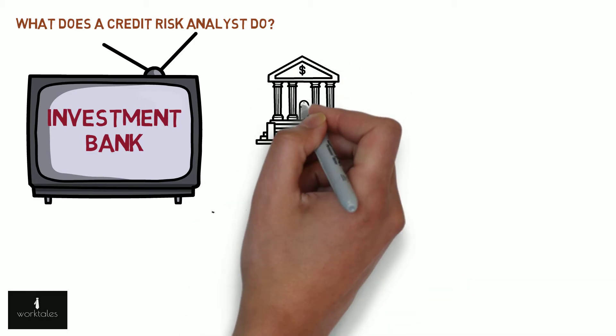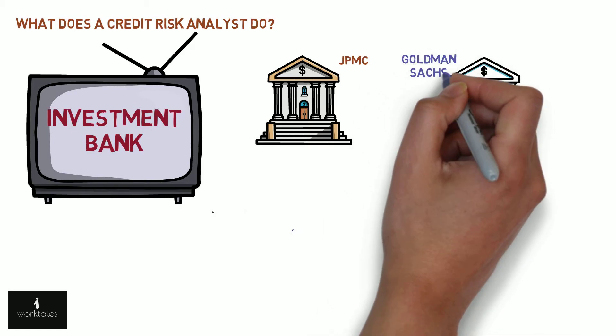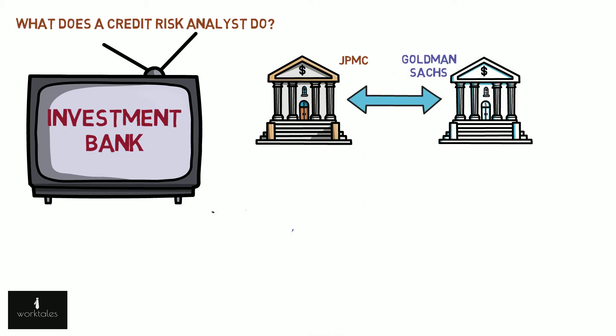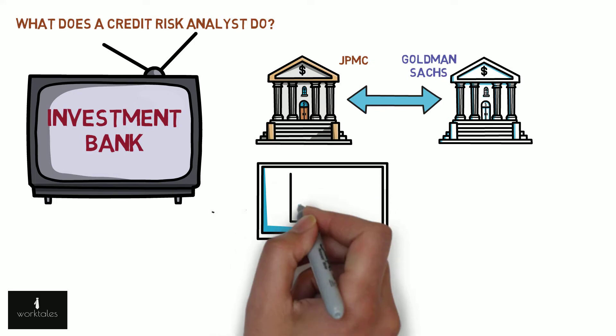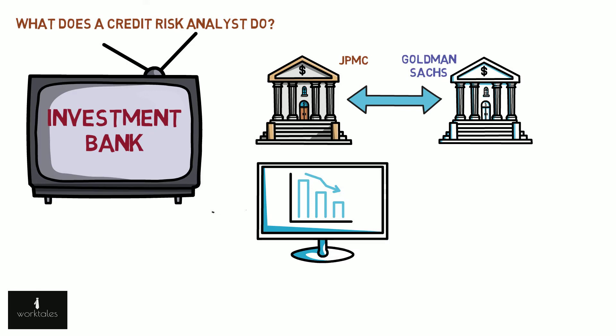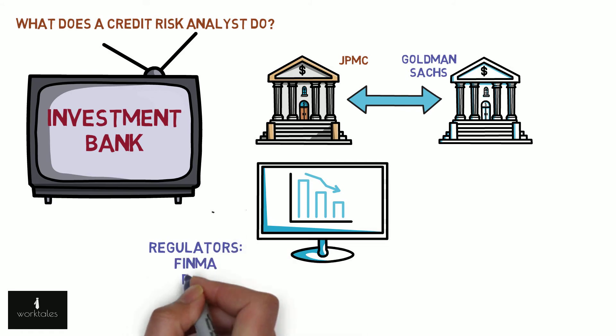Let's consider an example of a trade between two giants, JP Morgan Chase and Goldman Sachs. Banks such as these usually trade in complex products with difficult-to-predict payoffs. So when a trade is executed, analysts sitting in, let's say, JPMC's office would assess the net exposure against Goldman Sachs using their own models and try to determine whether Goldman Sachs will in fact be able to oblige to its commitments in the future or not. The analysts calculate risk in monetary terms and submit these numbers to external auditors such as FINMA, BRA, or IHC to meet regulation standards, and also to internal teams to keep a real-time check on the exposure against a particular counterparty.